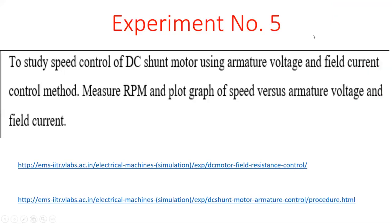Today we will start with our fifth practical, which is to study speed control of DC shunt motor using armature voltage and field current control methods. There are three methods of controlling speed of a DC shunt motor — armature voltage and field current are two of them. You have to use both these methods, measure RPM, and plot graphs of speed versus armature voltage and speed versus field current.